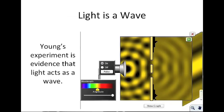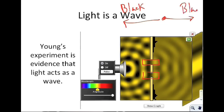Light is a wave. Young's experiment provided the first evidence of this. He had two light sources — think of two flashlights. When you shine a flashlight on a wall, there's a bright spot in the middle that fades to black. The assumption was that with two light sources, you'd just get a larger bright region that still fades to black. And that's what you see with a regular flashlight.